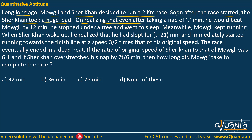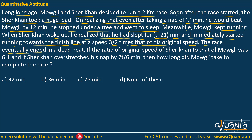On realizing that even after taking a nap of 10 minutes he would beat Mowgli by 12 minutes, he stopped under a tree and went to sleep. Meanwhile, Mowgli kept running. When Sher Khan woke up, he realized that he had slept for 10 plus 21 minutes and immediately started running towards the finish line at a speed of 3/2 times that of his original speed. The race eventually ended in a dead heat — dead heat means they both finished together, a tie.